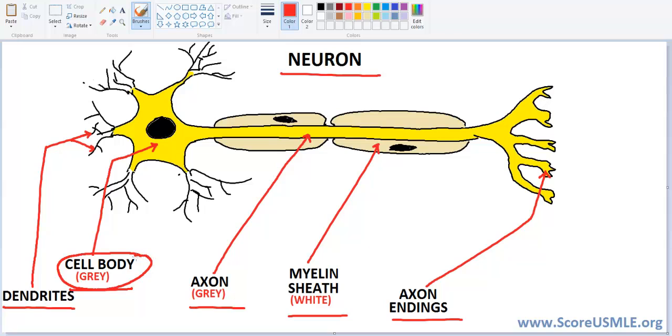Now I want you to know very clearly what parts are grey and what parts are white. So the cell body is grey. The axon is grey too. And the axon endings are always grey. But what is white? It's the myelin sheath. Now what makes the myelin sheath white? It's the lipids in the myelin sheath that make it white.